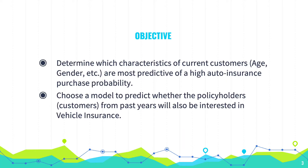The objective of this project is to determine which characteristics of current customers — age, gender — are most predictive of a high auto insurance purchase probability. The second objective is to choose a model to predict whether policyholders from past years will also be interested in vehicle insurance.